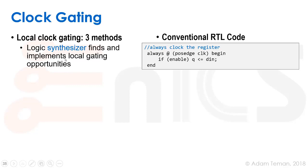There are three methods to do local clock gating. First, we can use the logic synthesizer to find and implement local clock gating opportunities. If we just write a flip-flop — always at posedge clock, if enable, q equals d_in — the synthesizer can run over this code, see an enable flip-flop, remove the enable, and instead use a clock gate. Remember, this is not Boolean equivalent, but it has the same functionality.